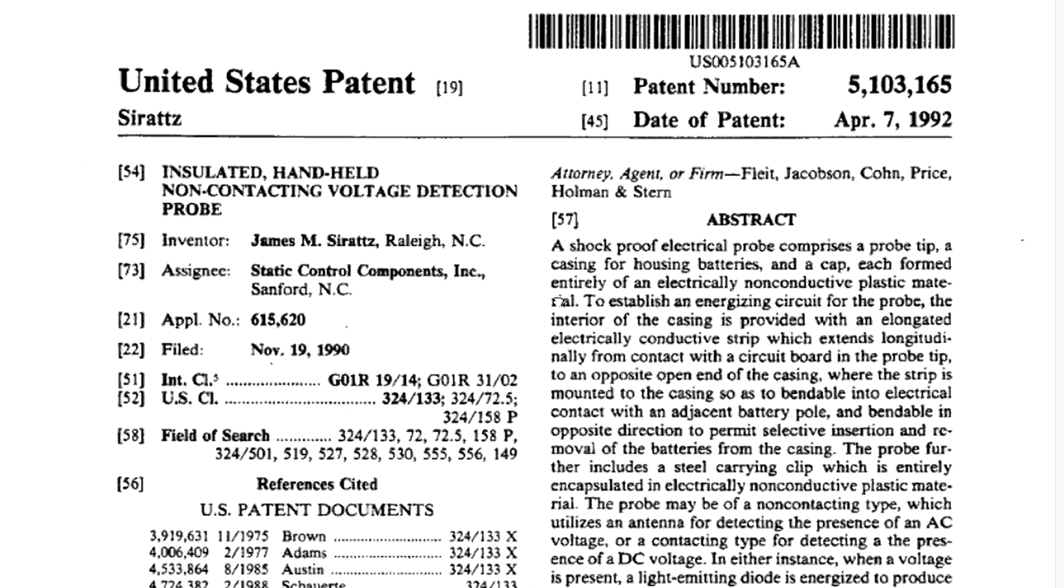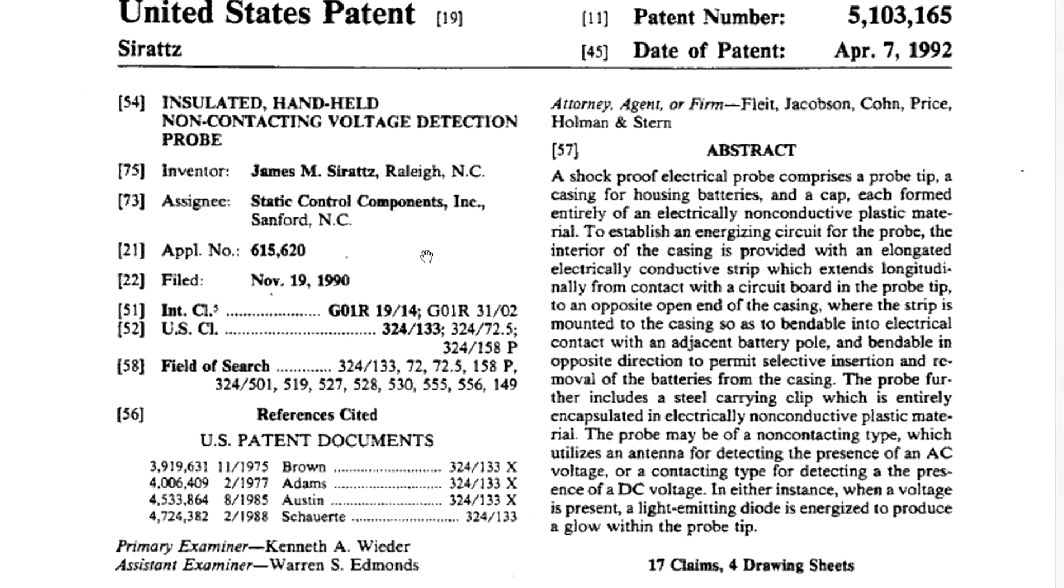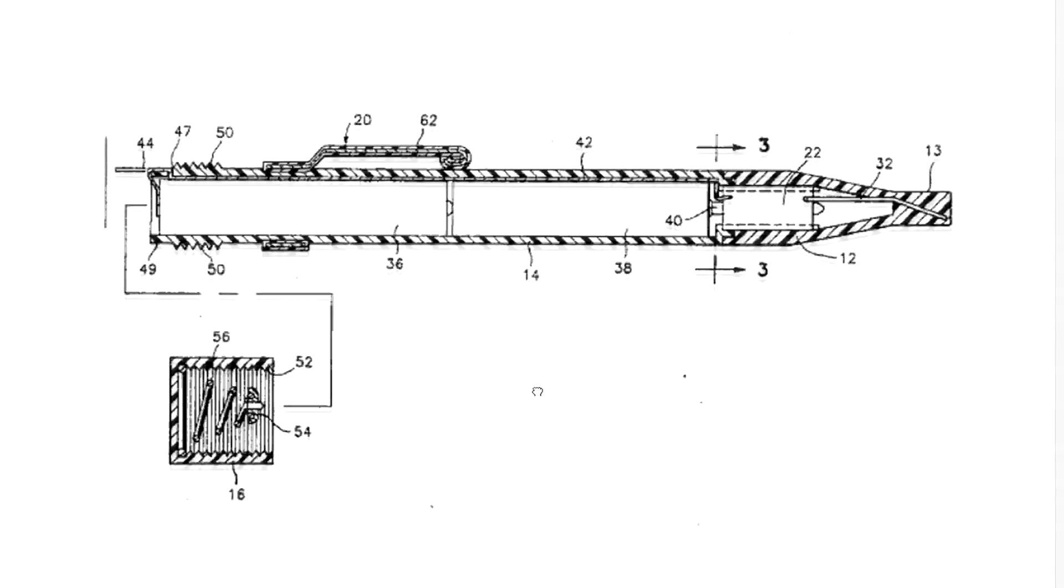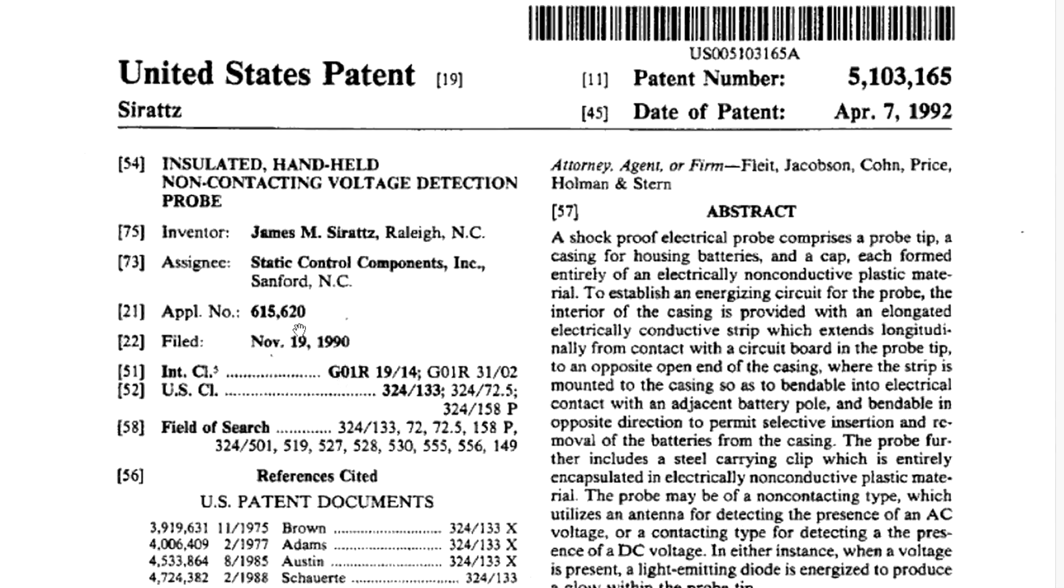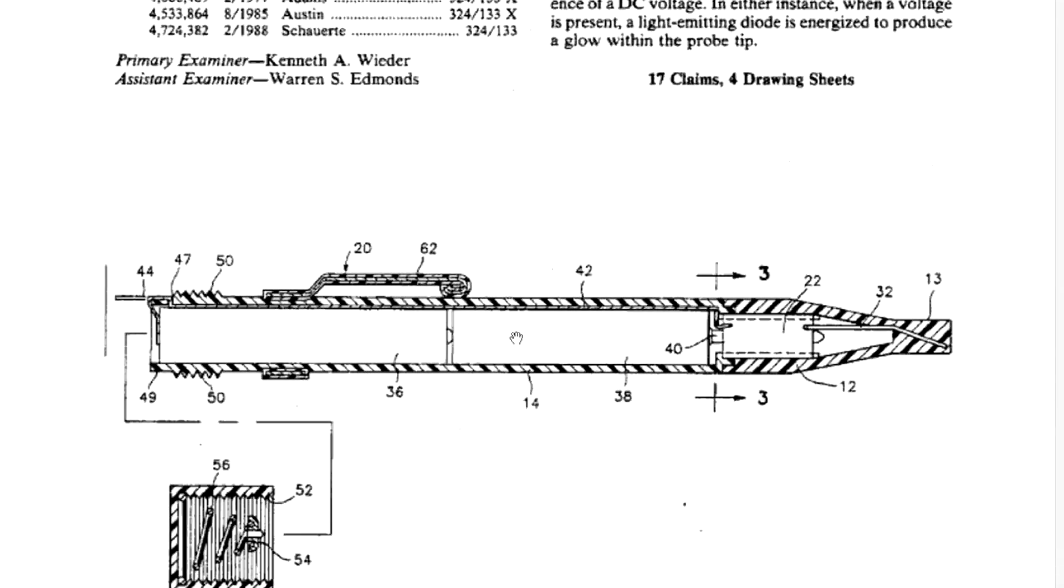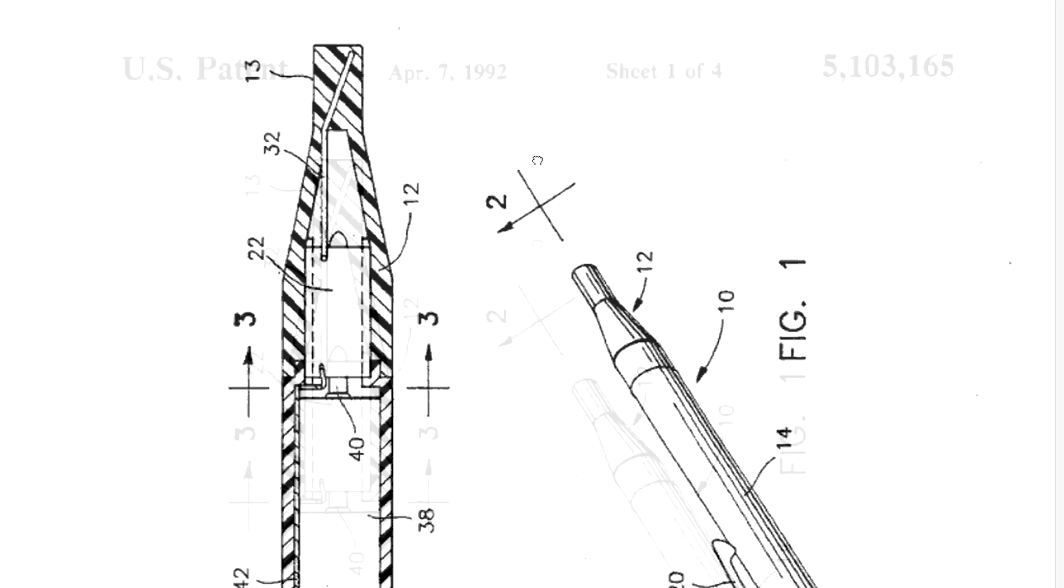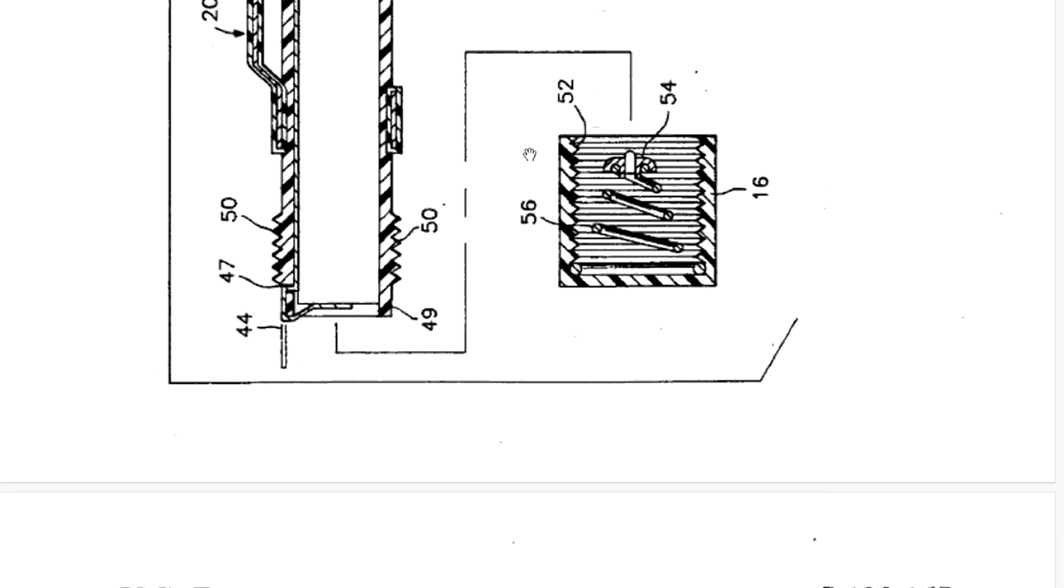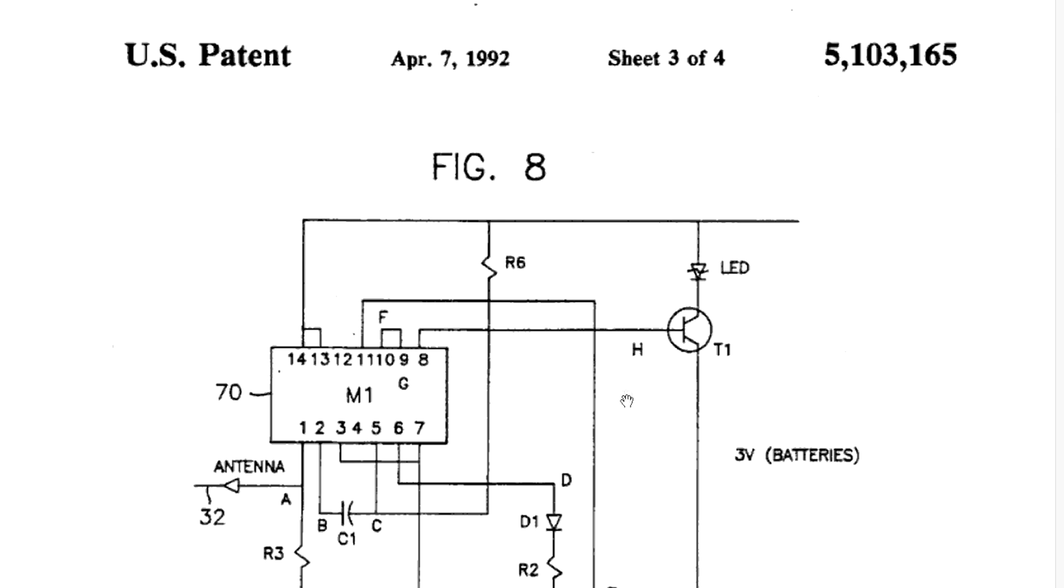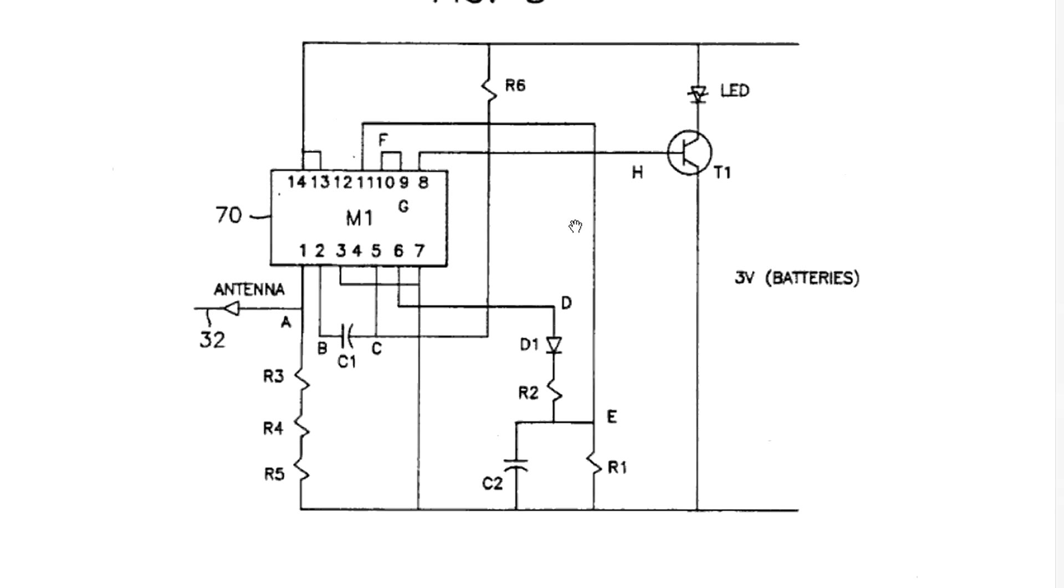So, I did a bit of a patent search here and I came up with this. It's United States patent number 5,103,165 from April 7th, 1992. And it's from a James M. Surrattes from Raleigh, North Carolina. And I presume he worked for Static Control Components, Inc. And it was filed in 1990, it was granted in 1992. And let's take a look at it. It is, well, the name of it is Insulated Handheld Non-Contacting Voltage Detection Probe. And bingo! That's pretty much exactly what we've got here. And it's the pen style probe. It's even got the pocket clip on it. But most importantly, if we go down, bingo! We've got a schematic. Let's take a look at it.